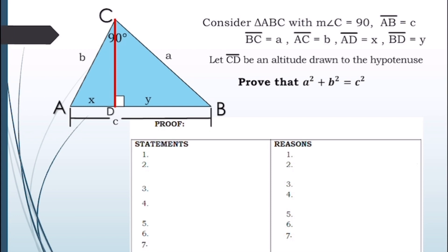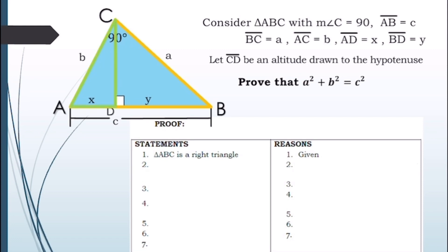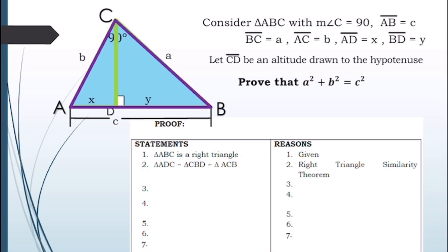For our first statement, triangle ABC is a right triangle. The reason is: given. For our second statement, triangle ADC is similar to triangle CBD, which is similar to triangle ACB. The reason is the right triangle similarity theorem.